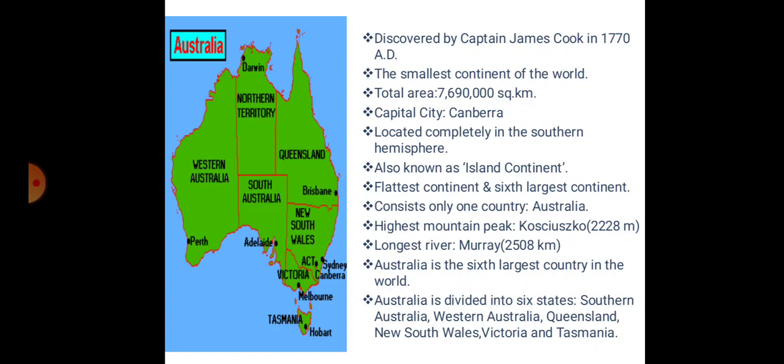Australia is the continent which was discovered by Captain James Cook in 1770 AD. It is the smallest continent of the world, and it is the only continent that consists of only one country — Australia itself. Australia has a total area of 7,690,000 square kilometers. Its capital city is Canberra.